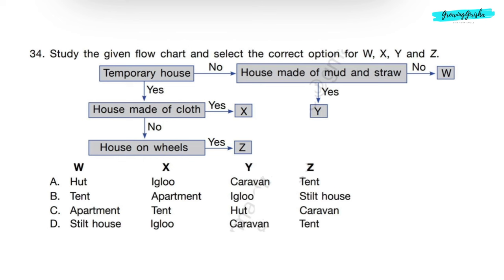Question 34: Study the given flow chart and select the correct option for W, X, Y and Z. Let's find out W first. Temporary house? No. House made of mud and straw? No. Means W is a permanent house: Apartment.